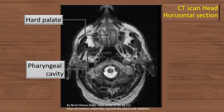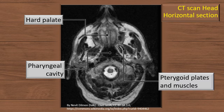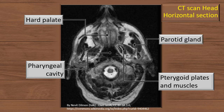Behind the hard palate, you can see the pharyngeal cavity. In the region of the pharynx, you can see the pterygoid plates and the pterygoid muscles on either side — the medial pterygoid and the lateral pterygoid muscles. Note that the medial pterygoid is on the outer side and the lateral pterygoid is on the inner side. Next, the parotid gland is visible outside this plane of the pterygoid plates — that triangular area, slightly darker in complexion, is the parotid gland. Here also you can see the superficial surface, the anteromedial surface, and the posteromedial surface, although not labeled at this point.